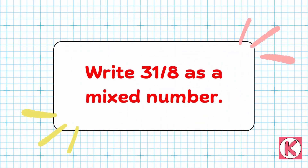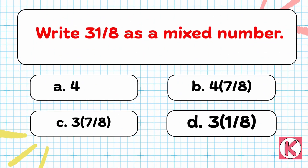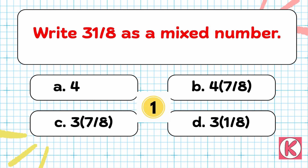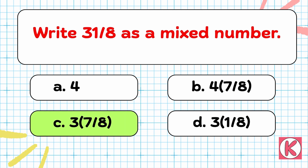Next question. Write 31 by 8 as a mixed number. Right answer: Option C — 3, 7 by 8.